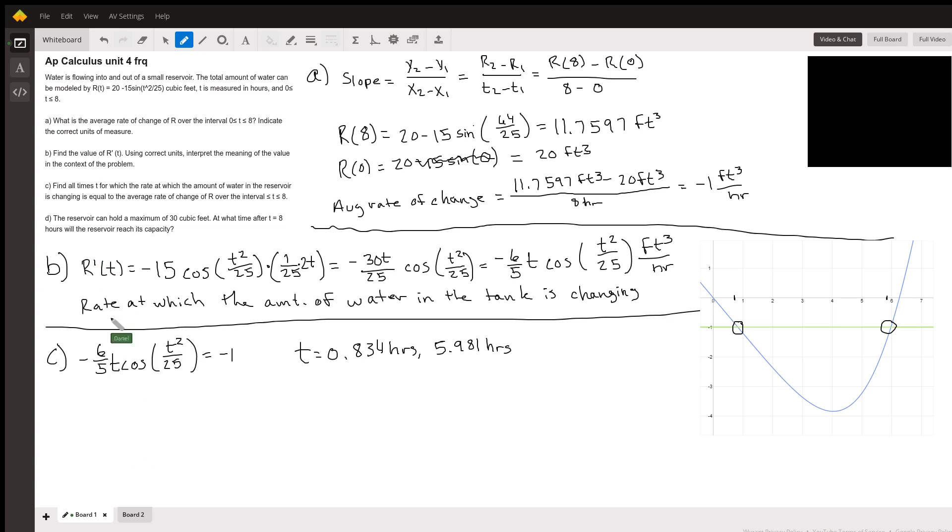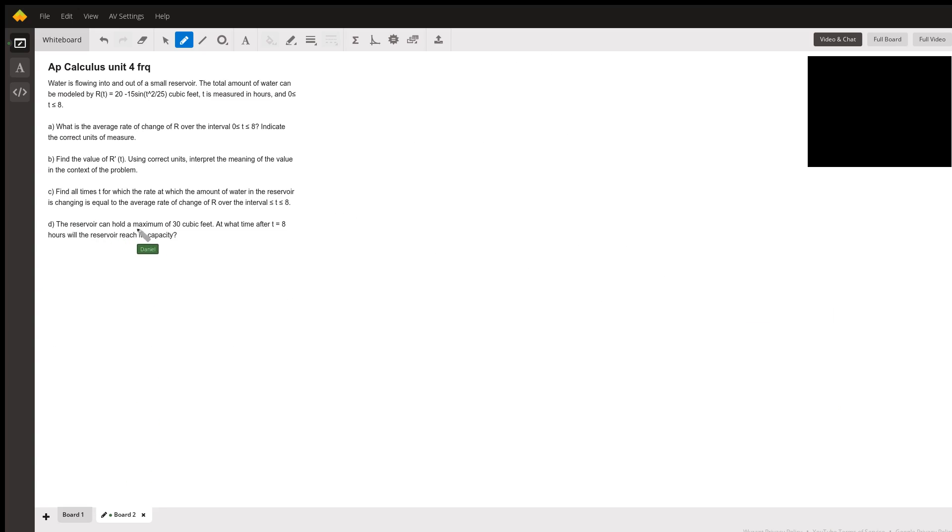Okay, then let's move on to part D. The reservoir can hold a maximum of 30 cubic feet of water. At what time after T equals 8 hours will the reservoir reach its capacity? So for this one, what I did is 20 minus 15 sine T squared divided by 25, we're going to set this equal to 30, our original equation. And then we want to find a T that would satisfy this equation.